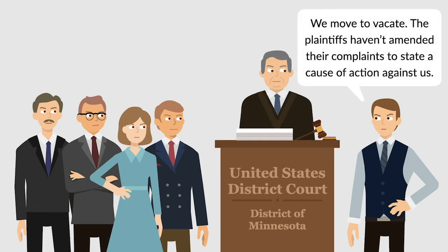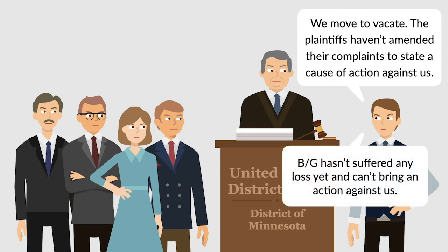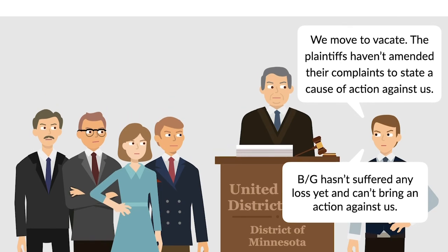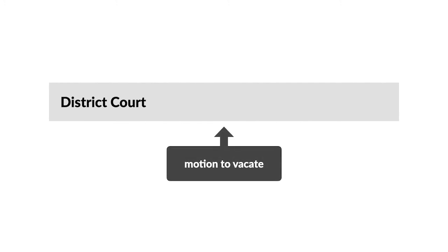Swift made a motion asking the court to vacate the order joining it to the lawsuit, on the grounds that the plaintiffs hadn't amended their complaints to state a cause of action against Swift, and BG hadn't suffered any loss at that time, and was therefore unable to bring an action against Swift itself. Accordingly, it argued that no relief could be granted to BG Foods against Swift.